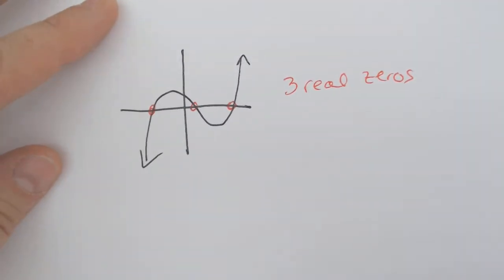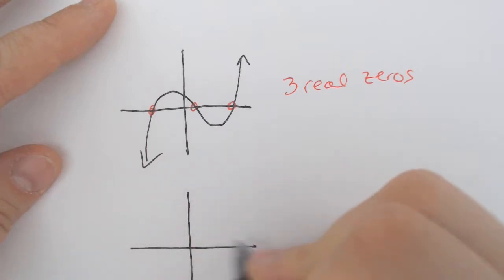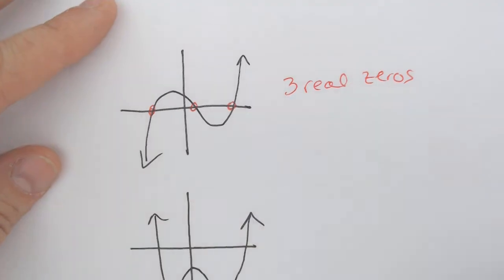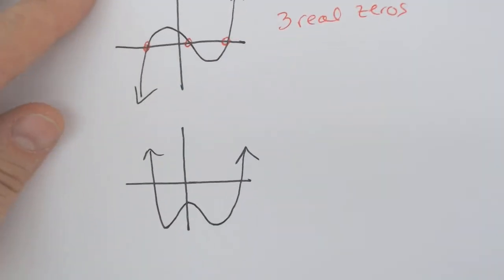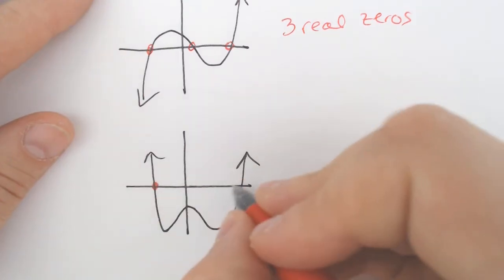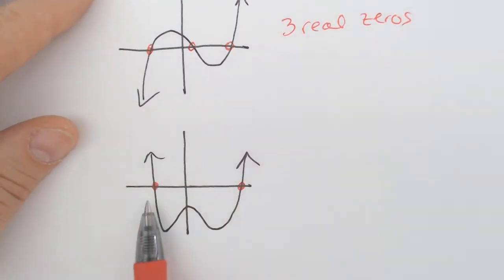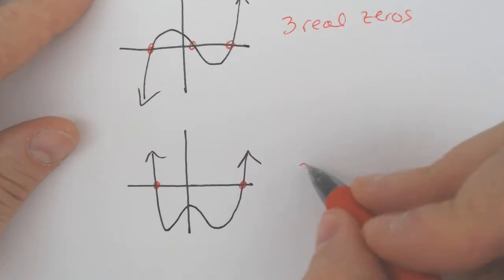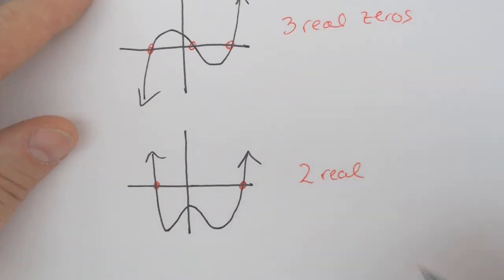But if I were to take a problem and graph it, and it kind of does a change in direction but doesn't go through the x-axis, then that would be adding in some imaginary zeros. And there's a few ways to figure out exactly how many you have. Well, let's start with the easy part. We got one, two. We got two real.